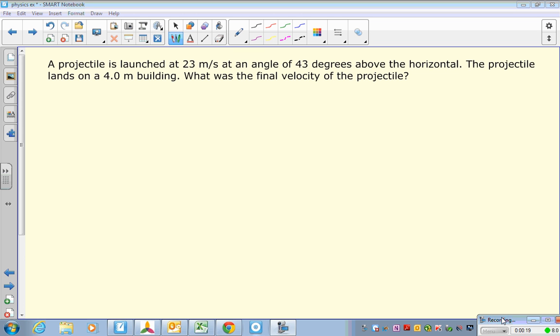So we have a projectile that's launched at 23 meters per second at an angle of 43 degrees above the horizontal. The projectile lands on a 4.0 meter building, and we want to find what the final velocity was when it hit the building. Maybe we're interested in figuring out is that final velocity enough to break a window or who knows. But for whatever reason, that's what we're interested in.